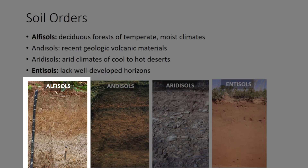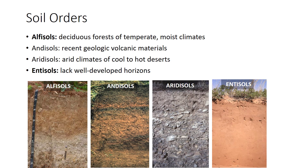Alfisols are usually soils of deciduous forests of temperate, moist climates. The A horizon is typically light-colored, and in undisturbed soils, O horizons often occur at the surface. Surface horizons may be acidic. Alfisols are generally good agricultural soils and constitute about 13% of U.S. soils, especially in north-central states.